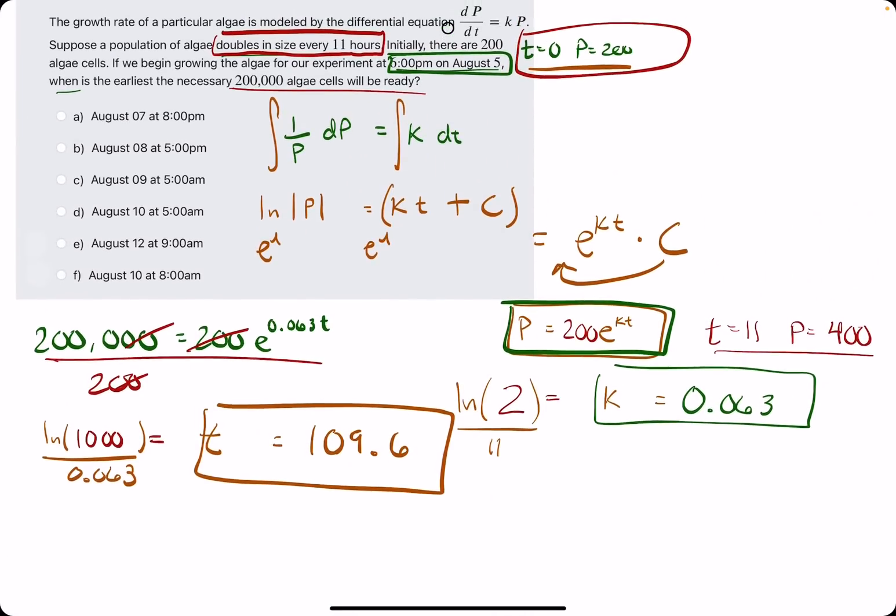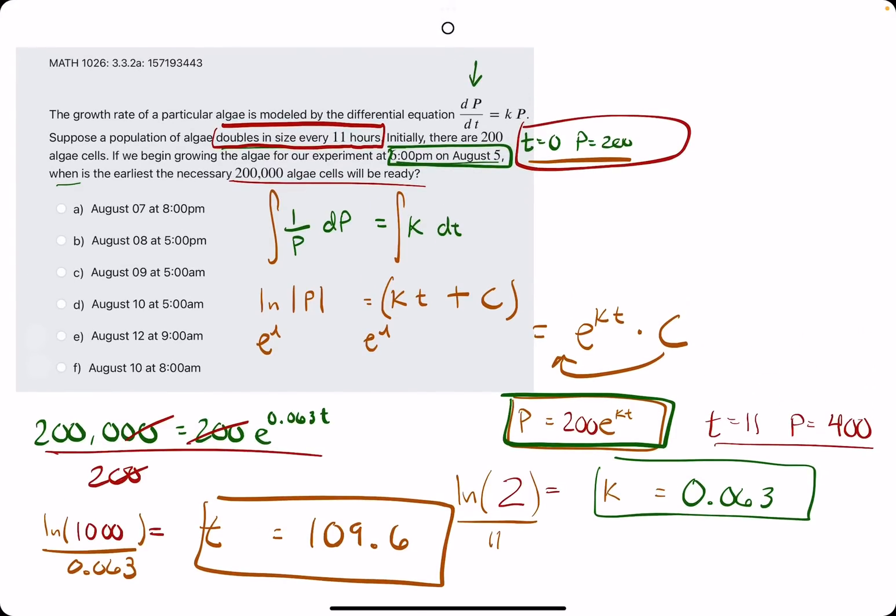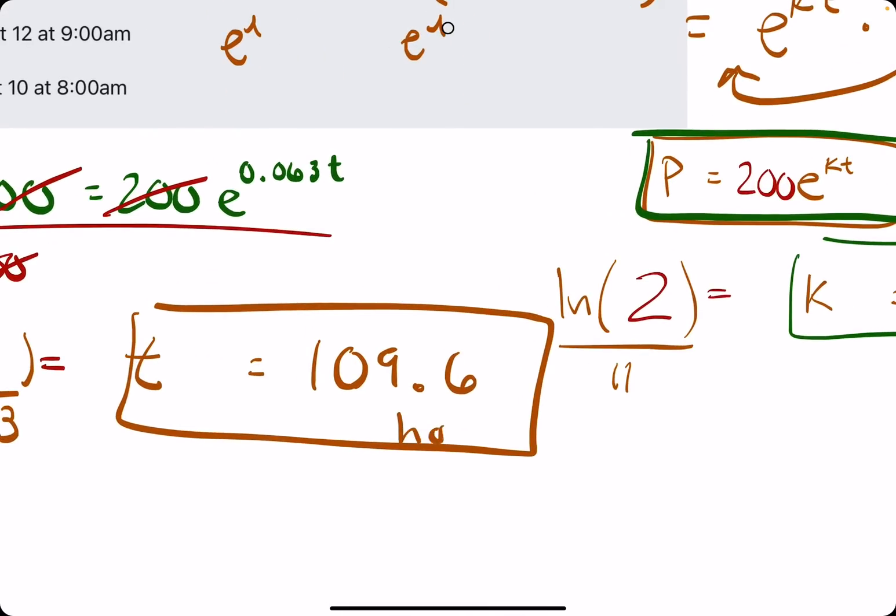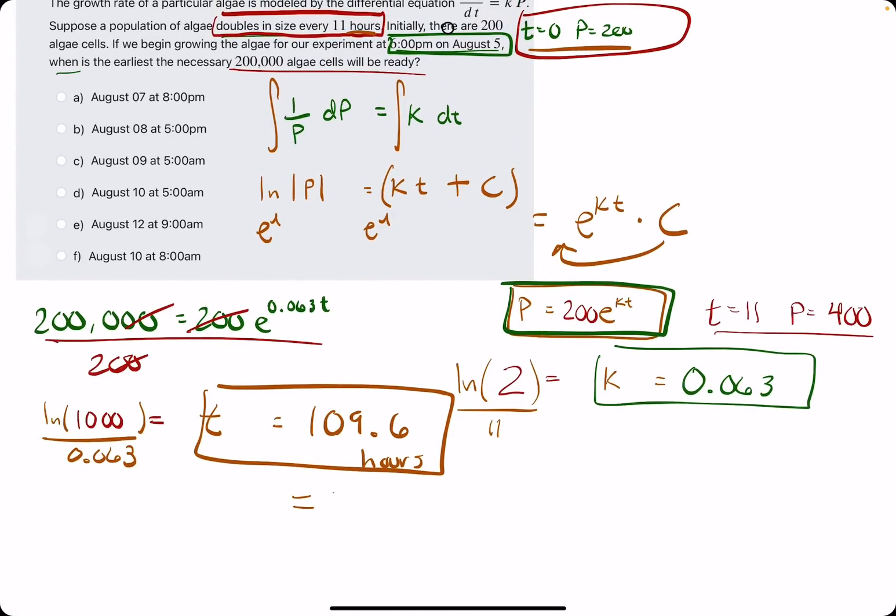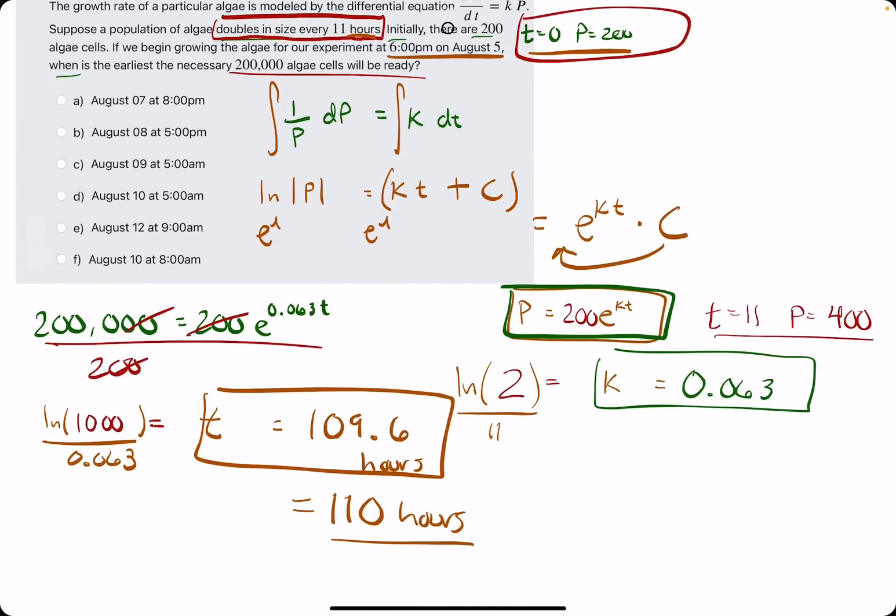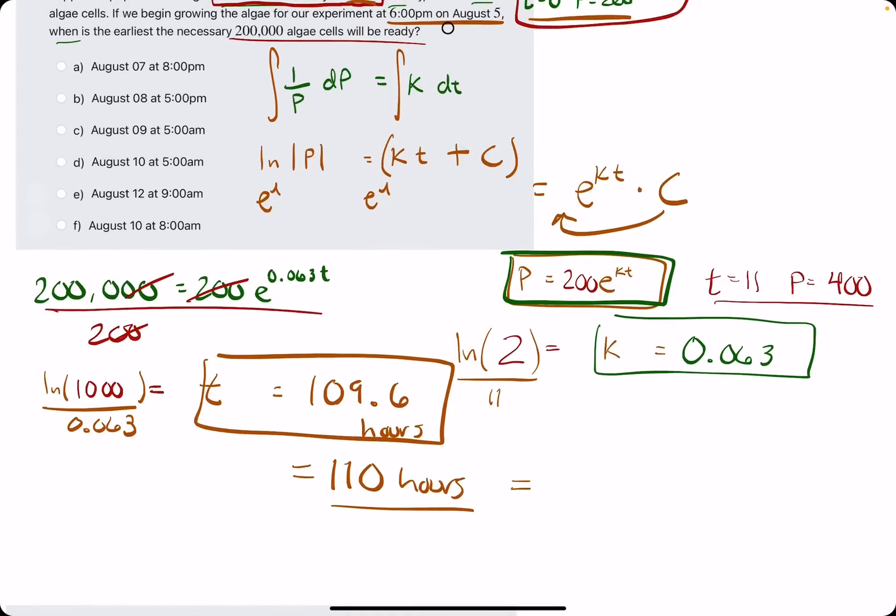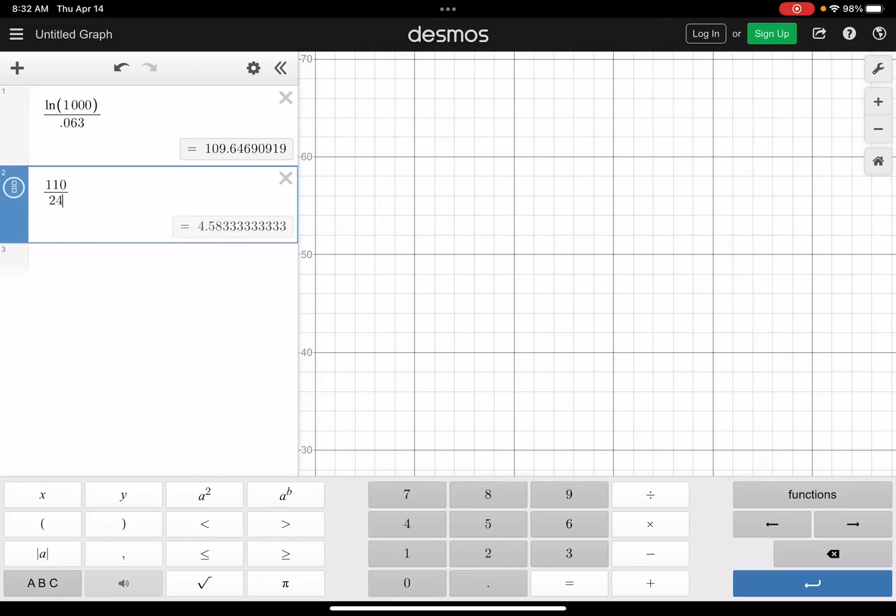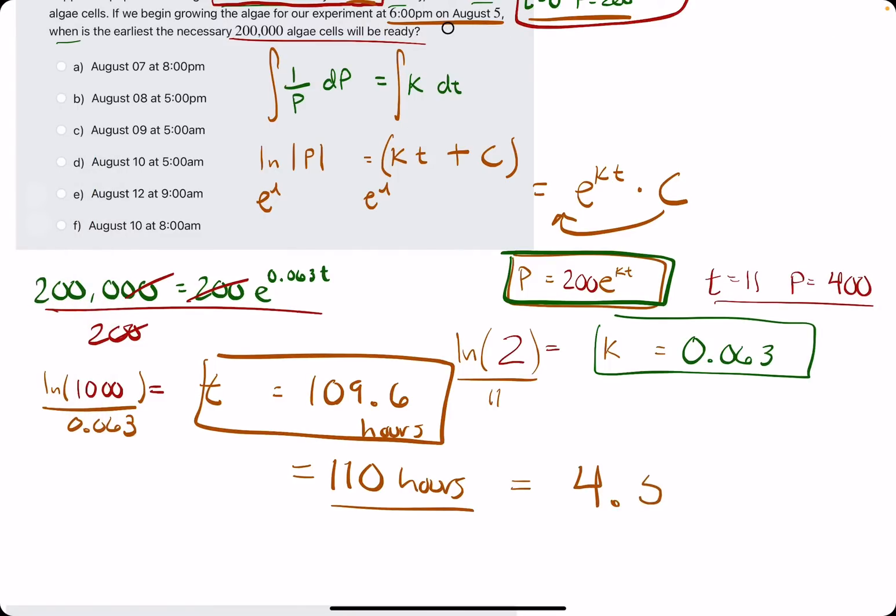All right. So now how do we use this? Keep in mind, our time units are in hours. And we know that just from the initial like 11 hours information they gave us. And so we know that 200,000 cells will be ready 109.6, we could probably round that to the nearest hour, the whole hour. So 110 hours. It'll be ready 110 hours after the 6 p.m. on August 5th. So let's see if we can figure this out. Let's figure out how many days and hours 110 hours is equivalent to. So we'll do 110 divided by 24 hours. That'll give us 4.58 days.